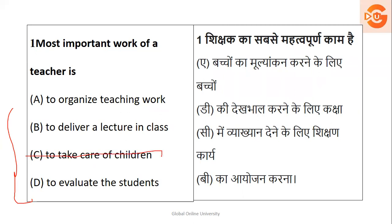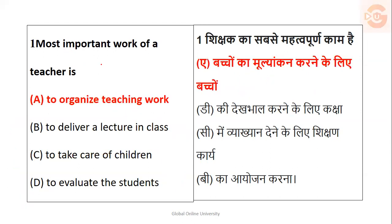Option C — to take care of children — is not very close. You may be confused between the remaining options: to deliver a lecture, to evaluate the students, and to organize the teaching. However, delivery of lecture and evaluation of students can only happen once the teacher has organized the teaching process very well — knowing when to deliver the lecture, what type, and the time limit. So the best option is to organize teaching work.